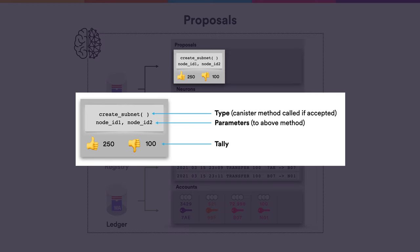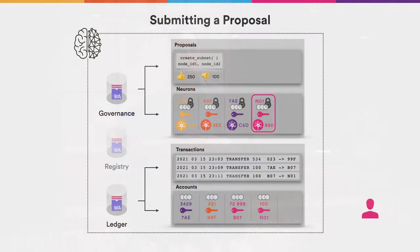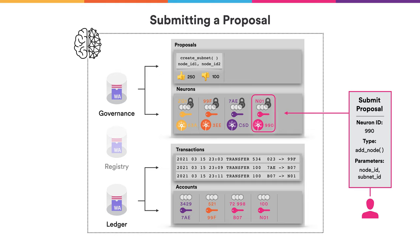Now let's look at the example where a pink user would like to suggest that a new node should be added to a subnet. Once the user controls a neuron, he can submit a new proposal by specifying the neuron ID, the type of proposal, and the proposal's parameters. In this example, the user suggests to add a node, so the specified method name is add node, and the parameters define which node should be added to which subnet. Upon receipt of this proposal, the governance canister checks that this user is the controller of the neuron and that the neuron is eligible to vote. If this is the case, the proposal is added to the governance canister, and the number of yes votes is set to the voting power of whoever submitted the proposal — meaning this proposal already has the support of the pink user's tokens.